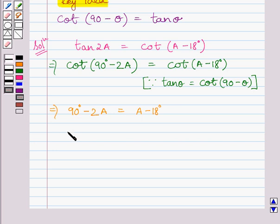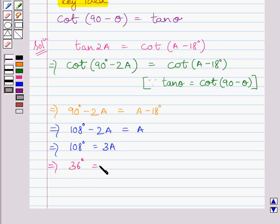Adding 18° on both sides, we get 108° - 2A equals A. Adding 2A on both sides, we get 108° equals 3A. Dividing both sides by 3, we get 36° equals A.